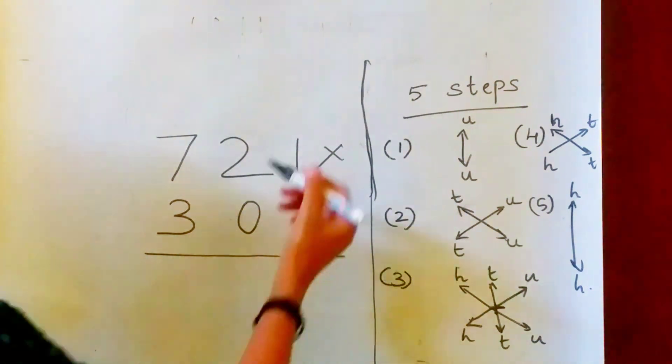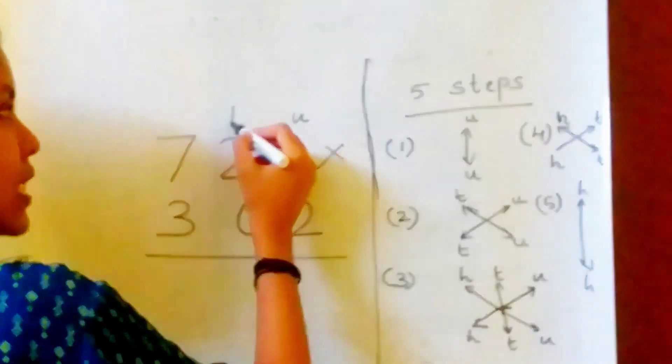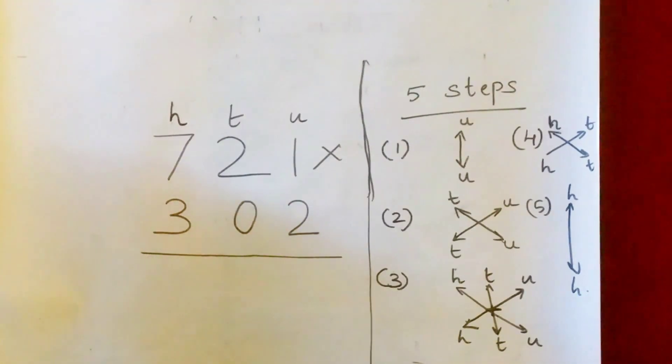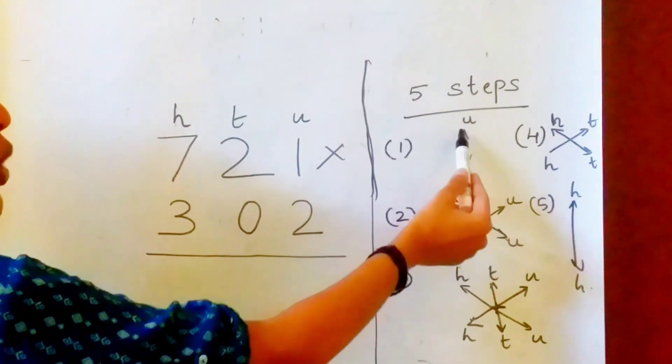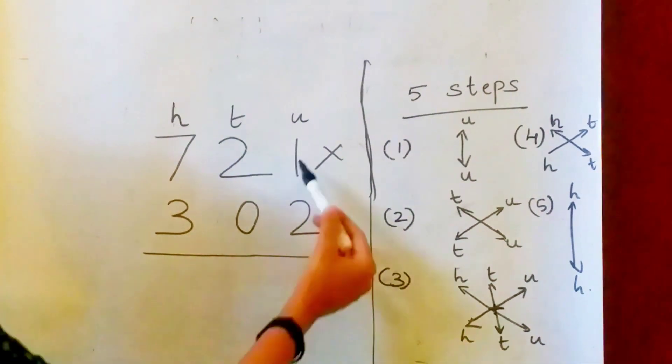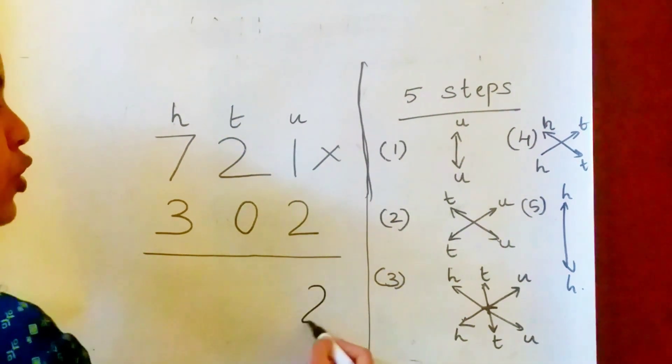First, you have to identify the units place, tens place and hundreds place. So this is the units place, this is the tens place and this is the hundreds place. What is the first step? Multiplying the units place with each other. 1 into 2 is 2.